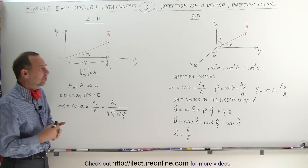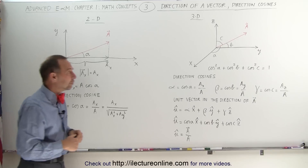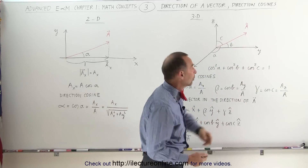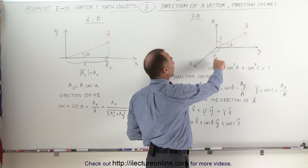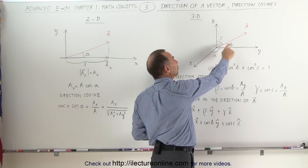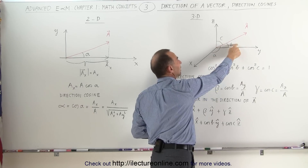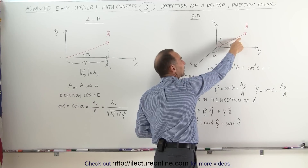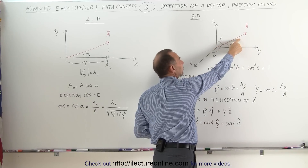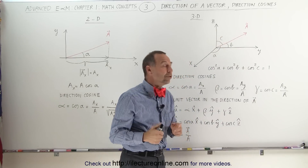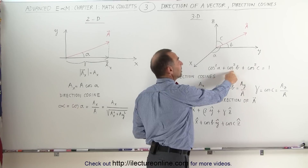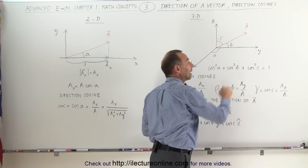In three dimensions, this becomes more useful. We have a vector A pointing somewhere in the x, y, z volume. Notice that we have three angles: angle A is the angle between vector A and the x-axis, angle B is the angle between vector A and the y-axis, and angle C is the angle between vector A and the z-axis. We then know that cosine squared of A plus cosine squared of B plus cosine squared of C has to add up to one.